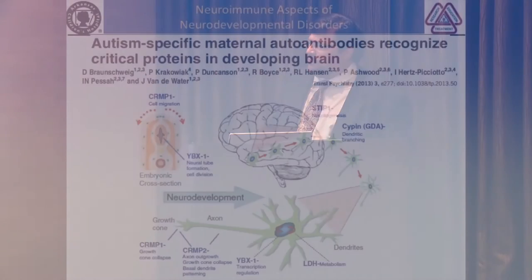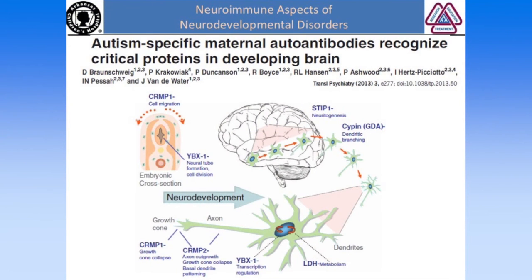Recently in 2013, they identified what some of these antibodies were. They seem to be a wide range of different antibodies — some that interfere with neural tube formation, others that interfere with neurogenesis, dendritic branching, metabolism, and axonal growth.